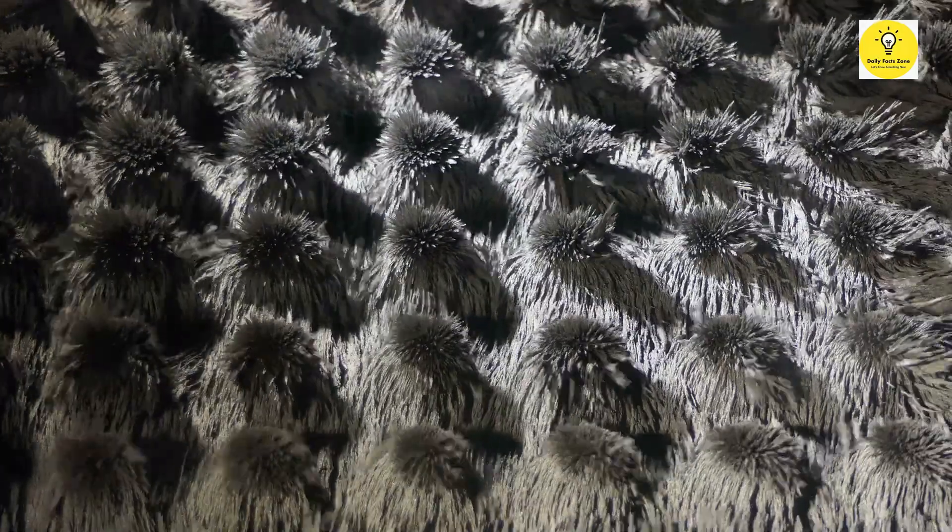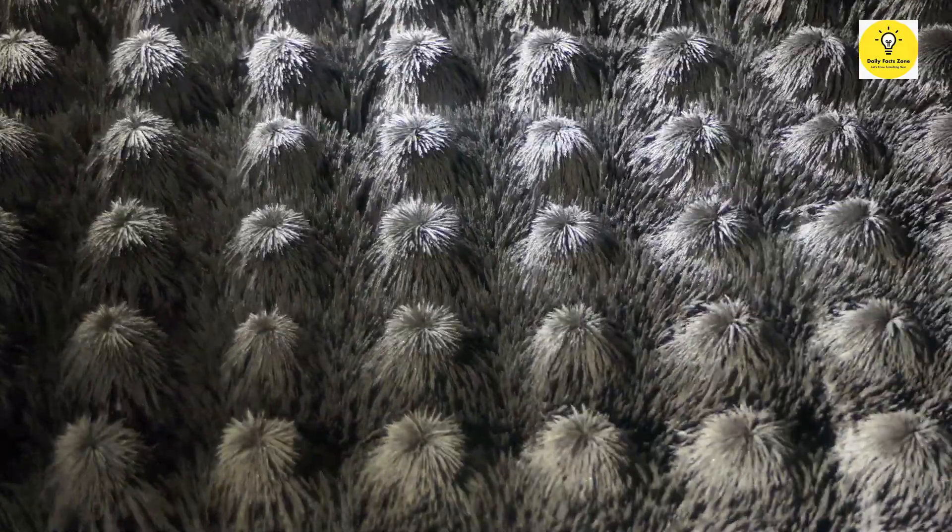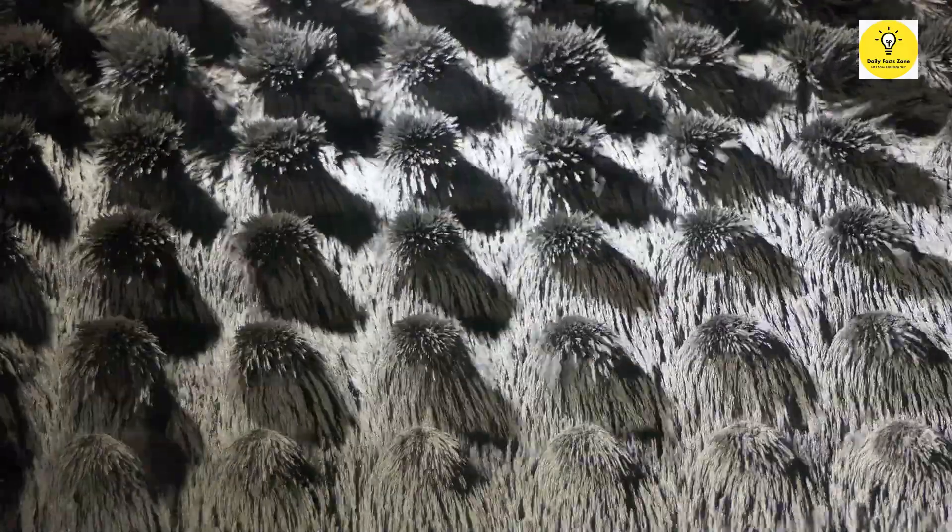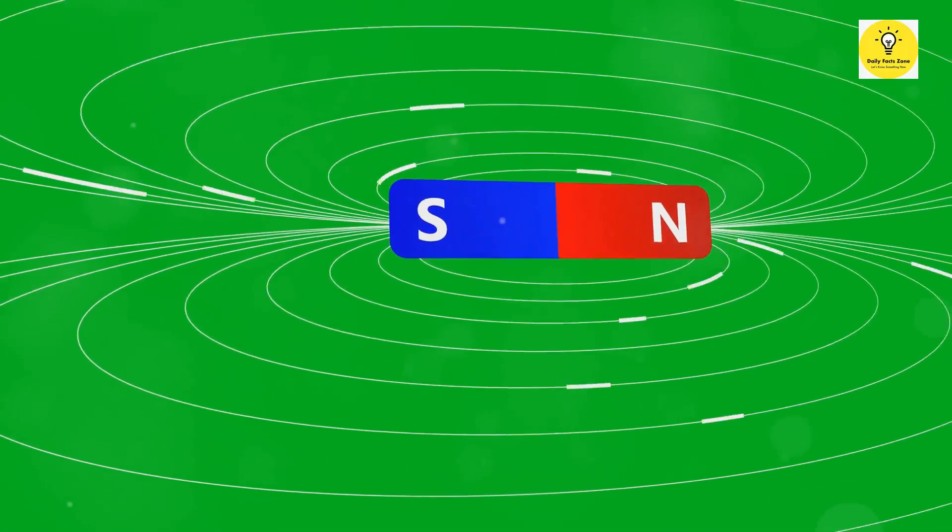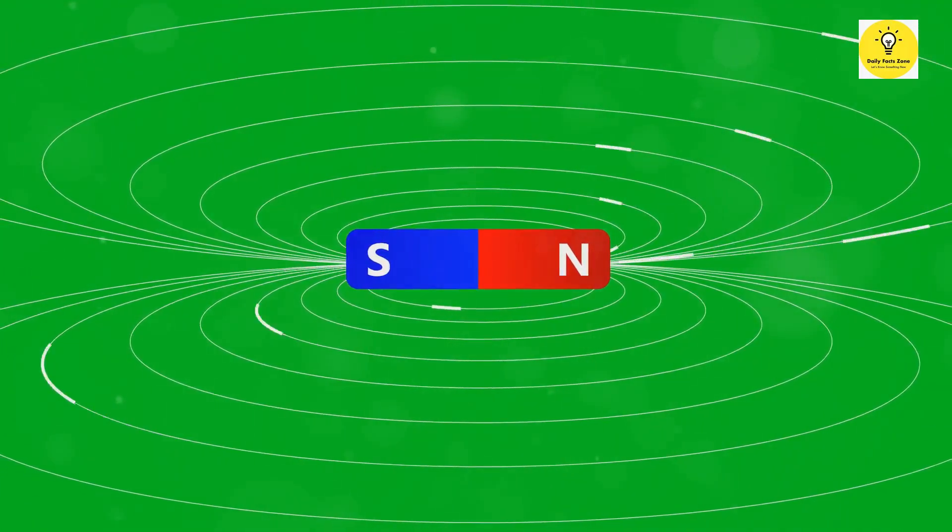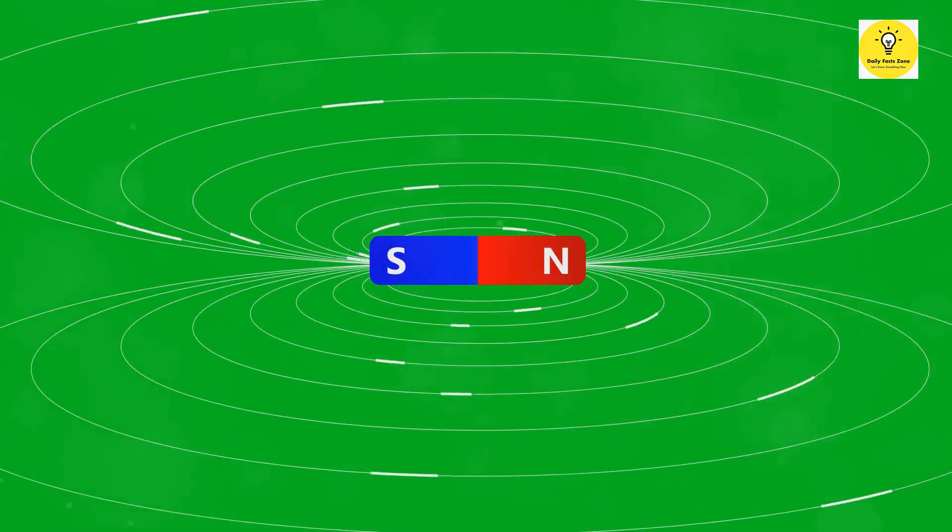The invisible magnetic field lines emanate from the North Pole and curve around to the South Pole, creating a continuous loop. These lines are a visual representation of the magnetic field and indicate the direction and strength of the magnetic force at any given point in space.